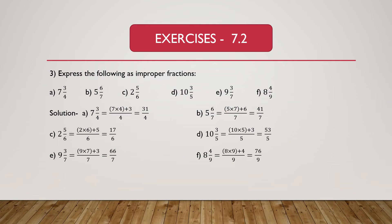Part B is given as 5 and 6/7. This is in mixed fraction form. We know improper fraction equals whole multiplied by denominator, and the result is added to numerator, divided by denominator. Here 5 is the whole part and 6/7 is the proper fraction. So 5 multiplied by 7 is 35, and 35 plus 6 equals 41, with denominator 7. So 5 and 6/7 equals 41/7.